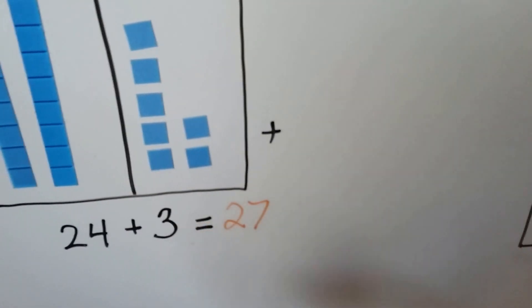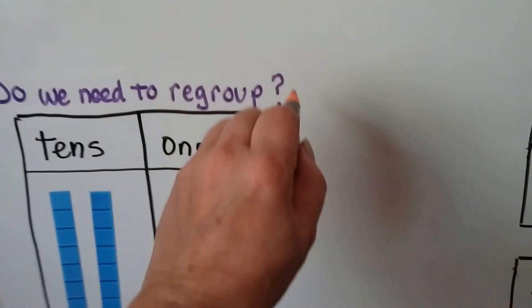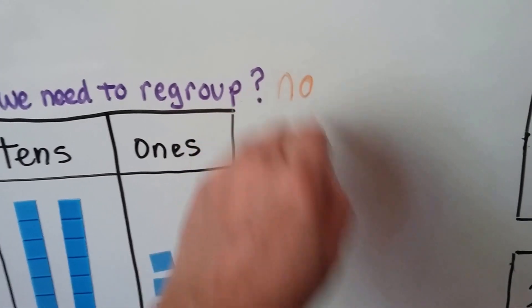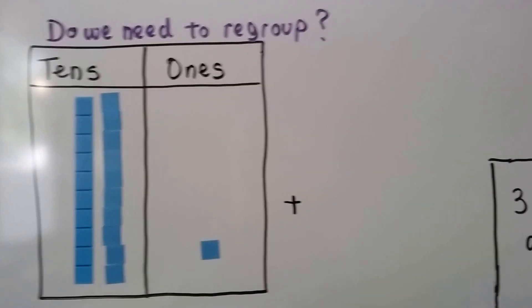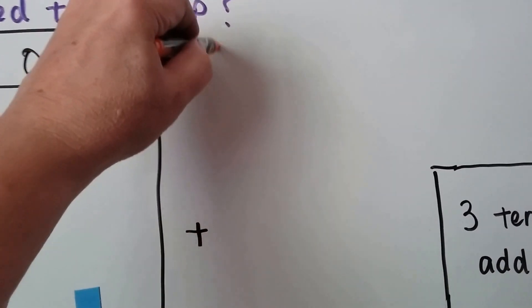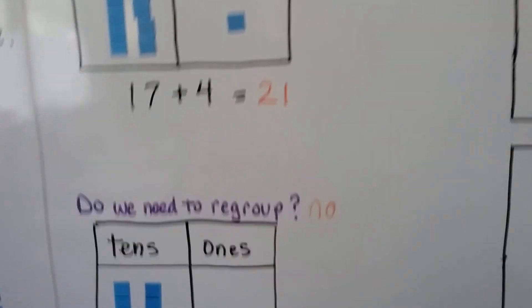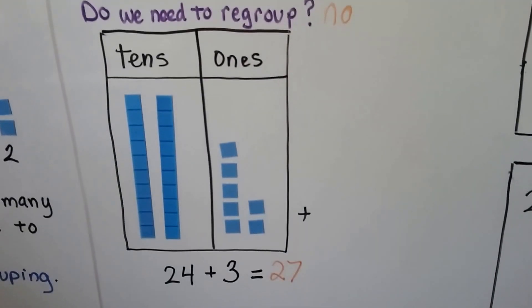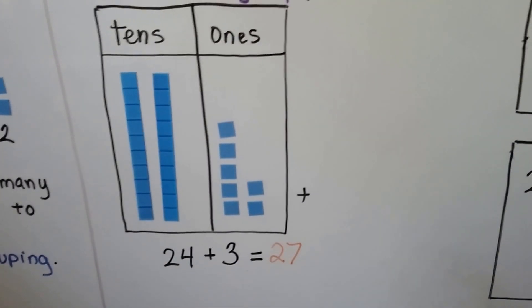2 tens and 7 ones is 27. So did we need to regroup? No. We did up here. We did regroup here, didn't we? That's a yes. Down here, we didn't have enough ones to make a 10. So we just kept it the way it was. 24 plus 3 is 27.